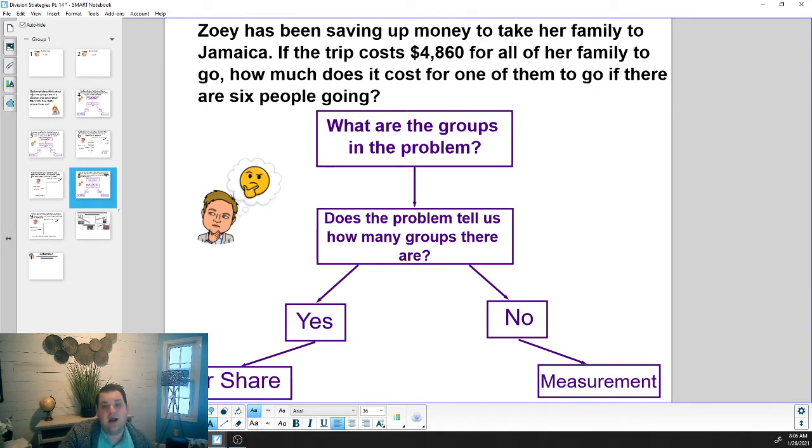Do we know, does the problem tell us how many groups there are? What do you think? Enter that into PlayPosit. If you said yes, you're correct because it tells us exactly how many people. There are six people. Because we said yes, this is a fair share problem.